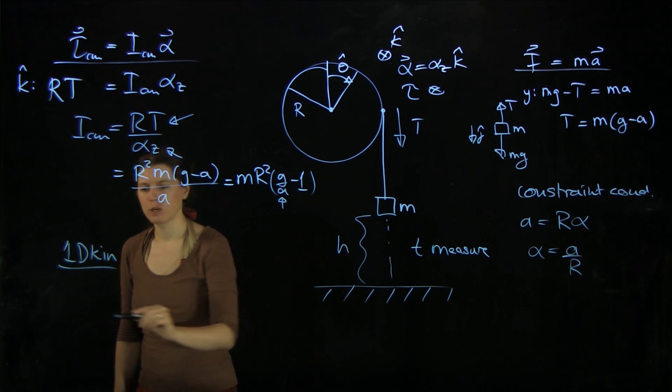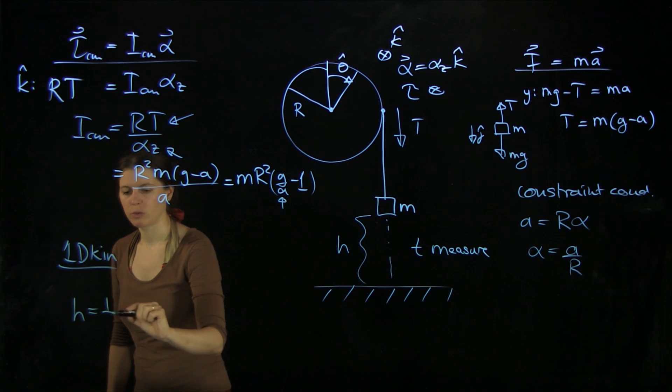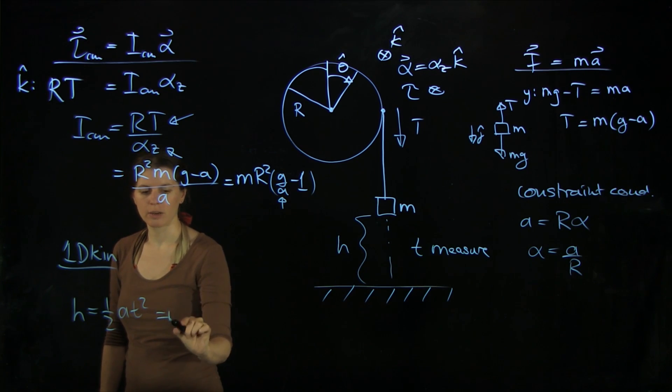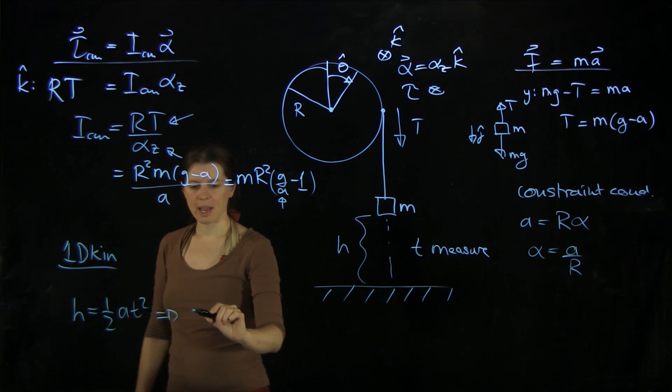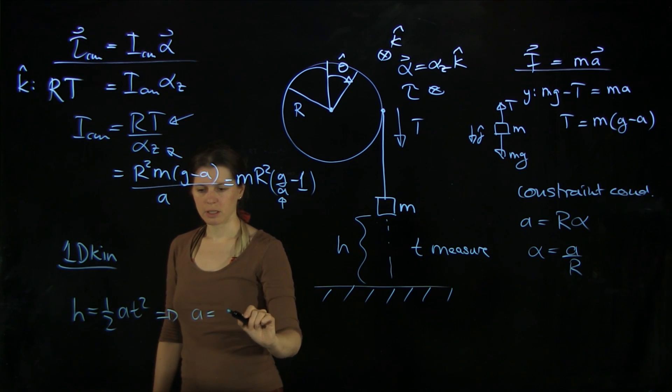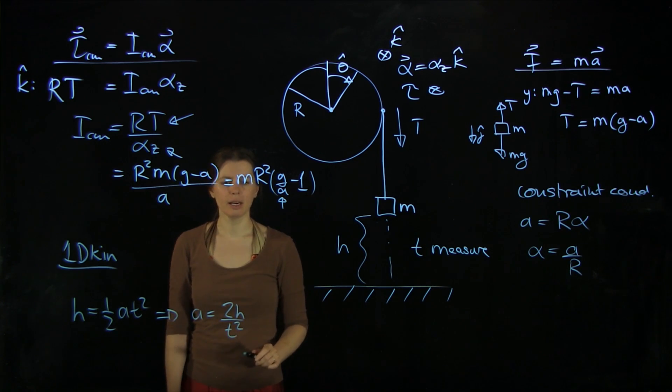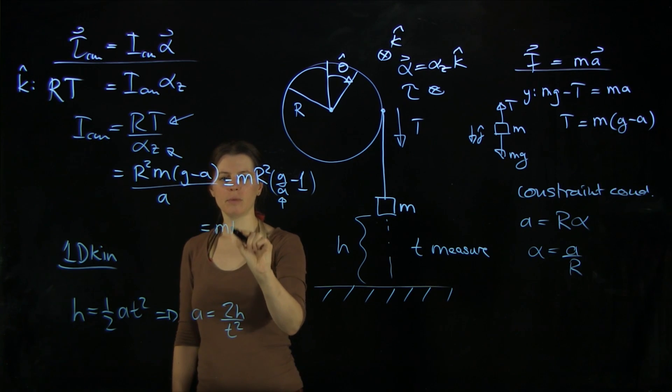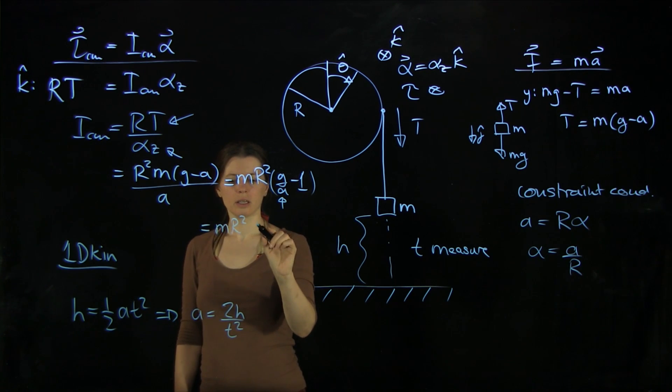And we know that h equals 1/2 a t squared. So we can solve that for a = 2h over t squared. And now we can stick that in here. And we have m r squared times (g t squared over 2h minus 1).